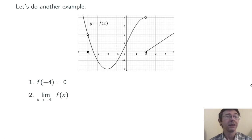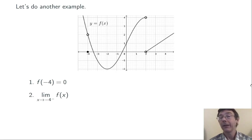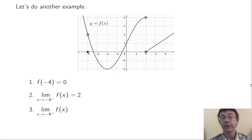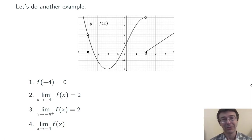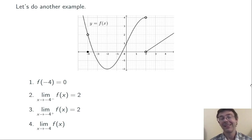The limit as x goes to negative 4 from the left of f of x: we're imagining x less than negative 4 coming towards negative 4, asking what happens to the y values. In this case they're getting closer and closer to 2. Similarly, if x is greater than negative 4, f of x gets closer and closer to 2. Regardless of what direction we come at negative 4 from, f of x is getting closer and closer to 2, so the overall limit is equal to 2.